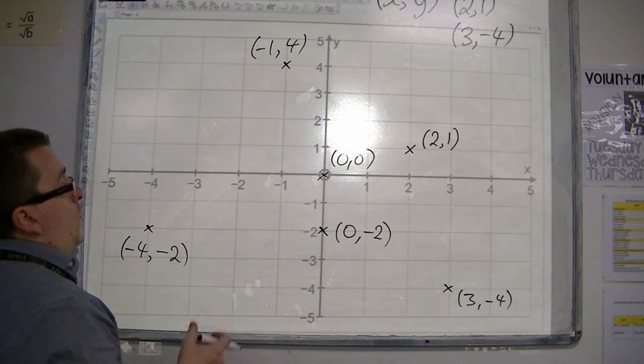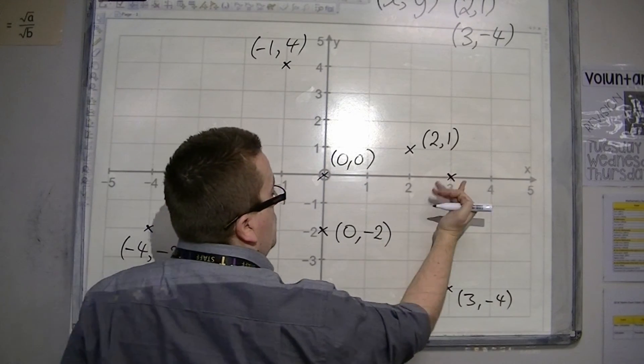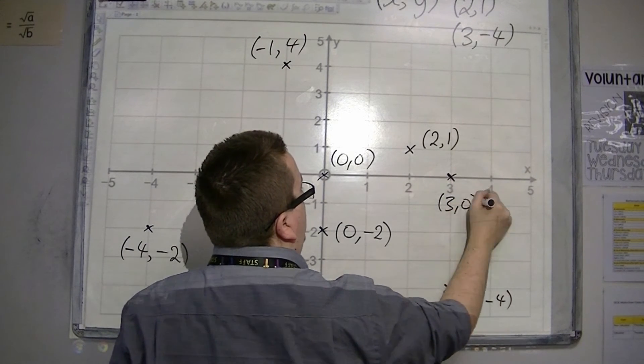So let's do one more. Let's say this point. Well, that's at 3 on the x-axis, but 0 on the y-axis. So that's (3,0).